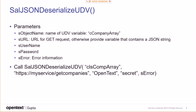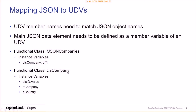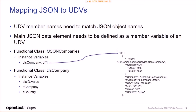There's also star-json-deserialize-udv, where you provide the UDV, the URL for the GET request, username, password, and error information. This is just for getting data — you provide the UDV array and the URL. If something doesn't work, it's very likely you have a mismatch in the UDV definition.